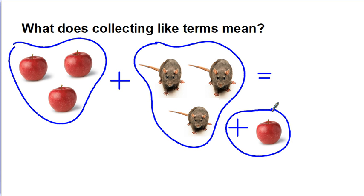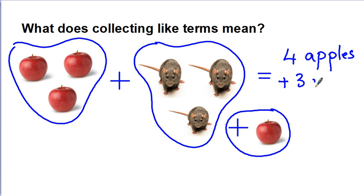So in our case, I'm going to have three apples plus another apple, which gives me four apples. I still have the three mice left, so I can say plus three mice. The next question is whether I can add the apples and the mice together. Clearly we cannot, because they're not the same thing. This is the idea to get used to when talking about like terms. Now let's move over to a question where we have to collect like terms.